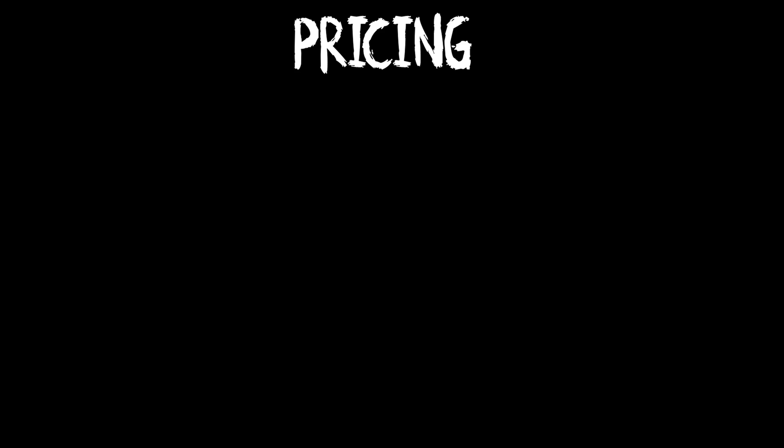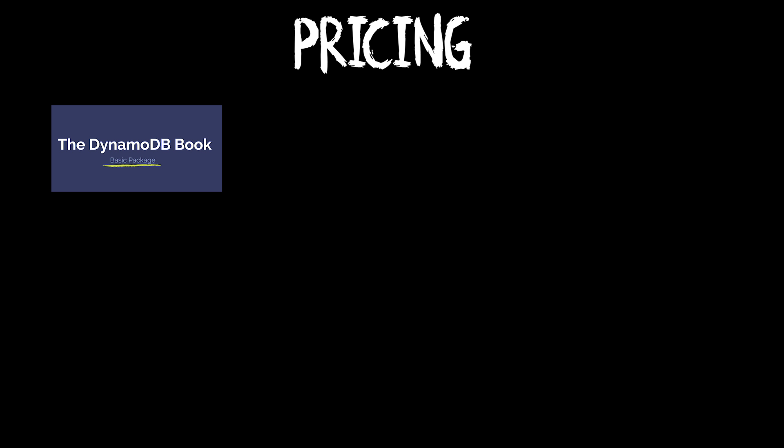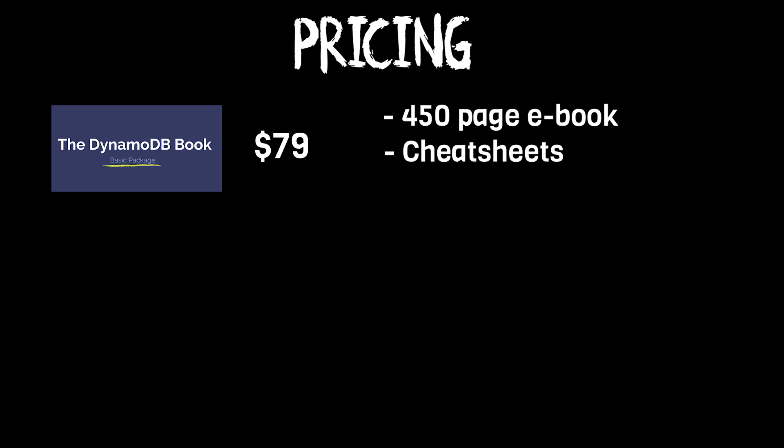In terms of pricing, there are three packages to choose from. The basic package is $79 and includes the digital ebook and six printable cheat sheets. The cheat sheets are great reference material to come back to later when facing a specific problem, and include definitions, strategy summaries, and code examples.